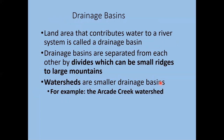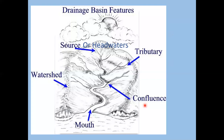Drainage basins are the land areas that contribute water to a river system. They are separated from each other by divides — the tops of ridges or mountain tops. The term watershed is sometimes used interchangeably with drainage basin; we usually think of a watershed as a smaller drainage basin. The anatomy of a drainage basin includes the headwaters (source), the main channel, the mouth where it outlets, tributaries that contribute water, and the confluence where streams meet.